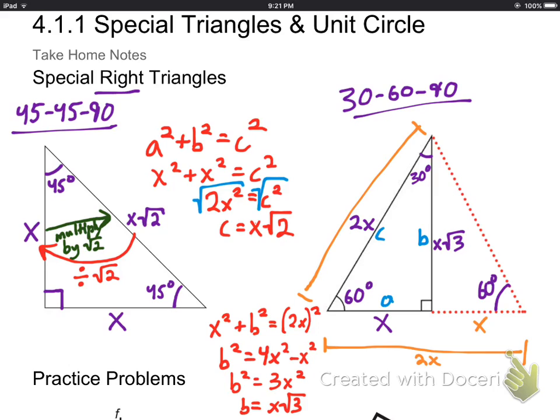So another way of thinking about this is, again, if you have x, all you have to do is multiply by two to get to the hypotenuse and multiply by root three to get to the other leg. So let's look at that here in a few practice problems.